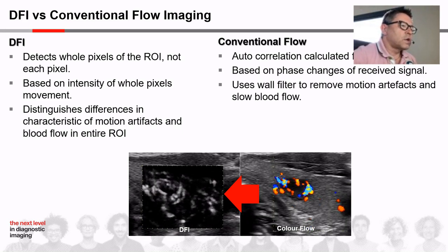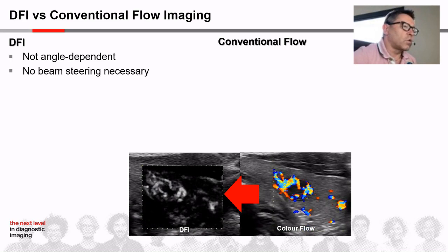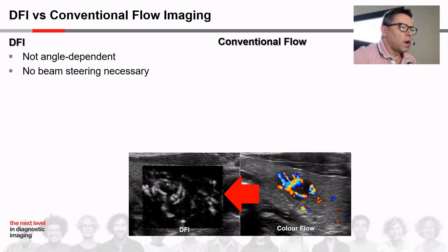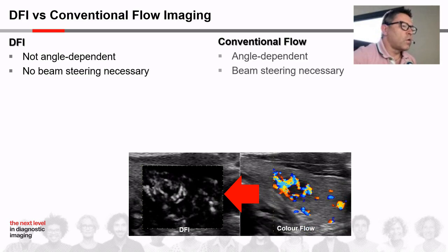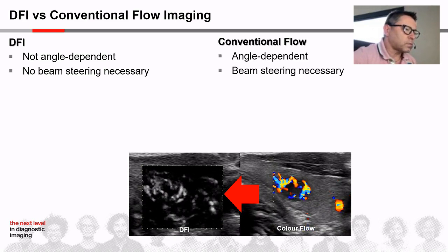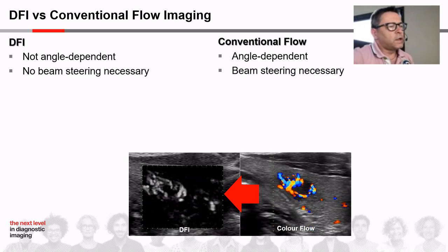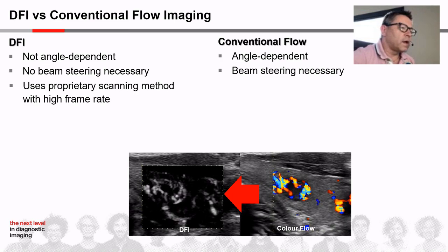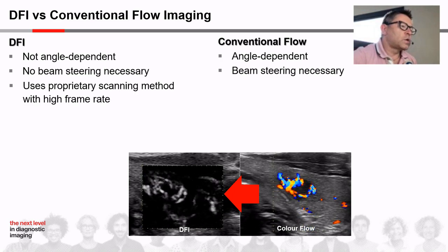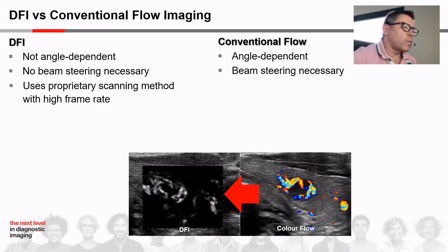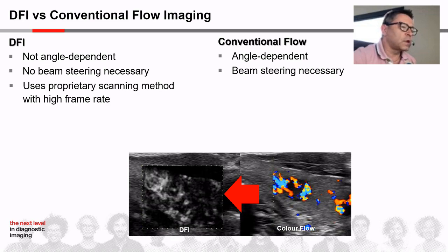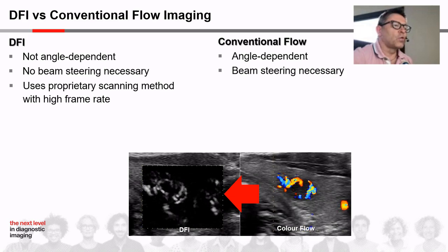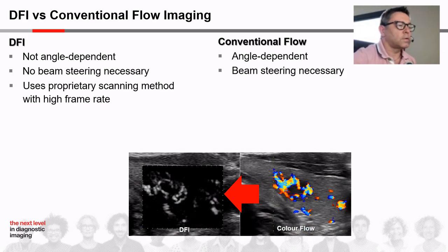DFI does not use the change in phase of the received signal, so it is not angle dependent and no steering is necessary, whereas conventional flow has to face angle limitations. DFI detects motion artifacts and micro blood flow using a proprietary DFI scanning method with very high frame rate. High frame rate helps to detect motion artifacts due to their cyclic nature and can reduce the contamination of useful slow blood signals.